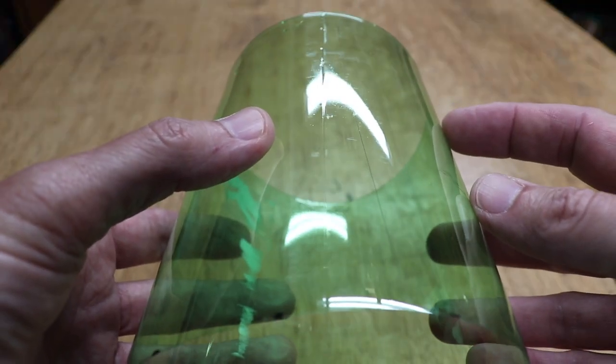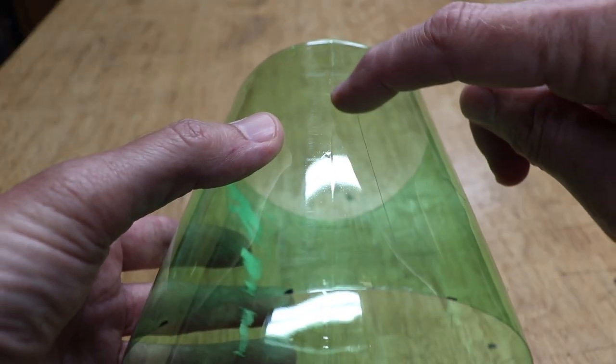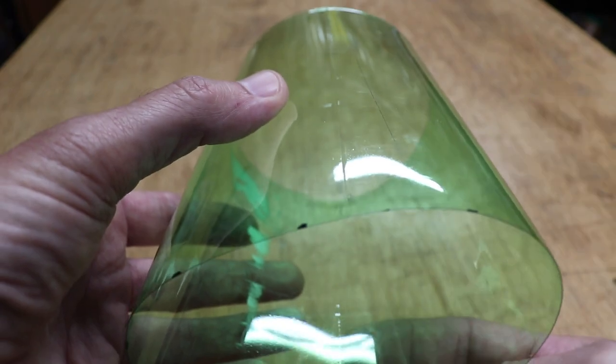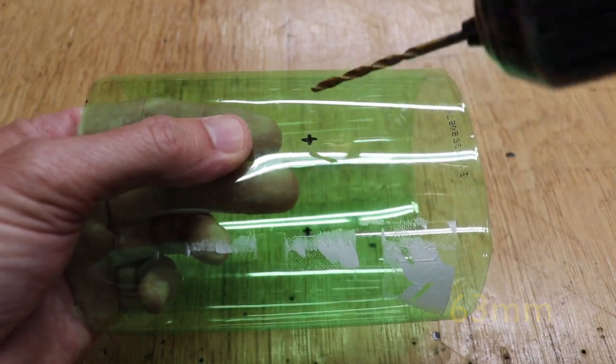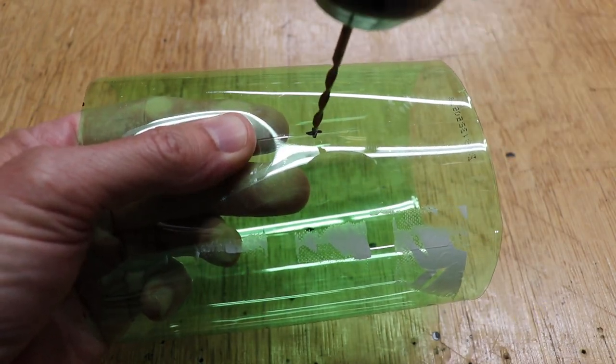So have a close look at this piece and you'll notice that there's two lines that are molded right into the plastic. One here and one on the opposite side. So measure down those lines at two and a half inches and make a mark. Now take a drill bit that's bigger than the coat hanger and drill the two holes.